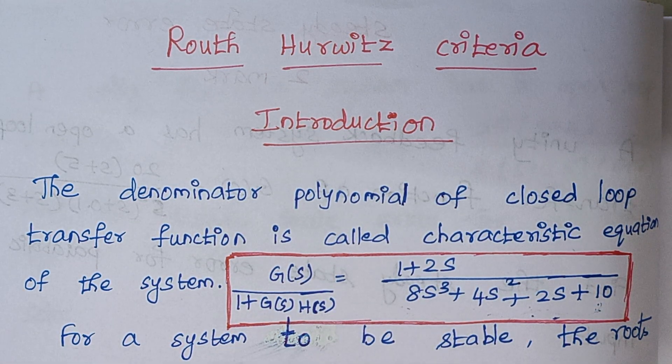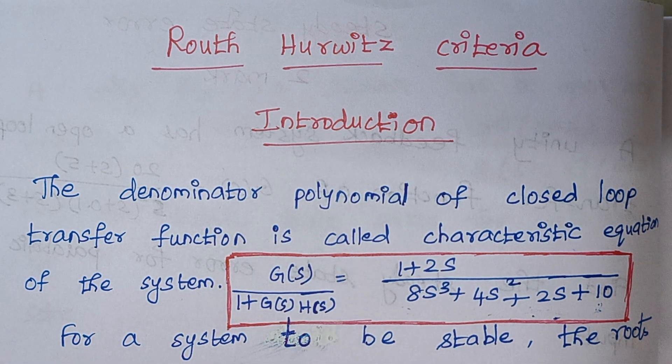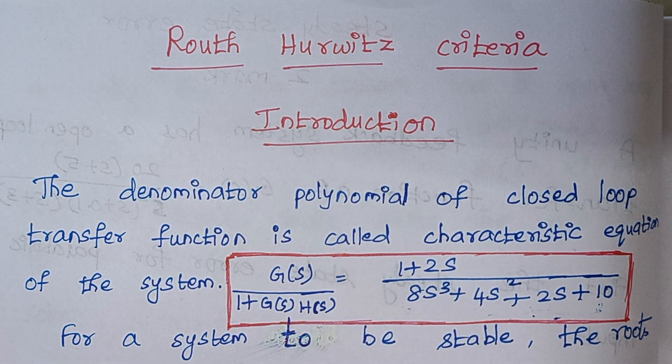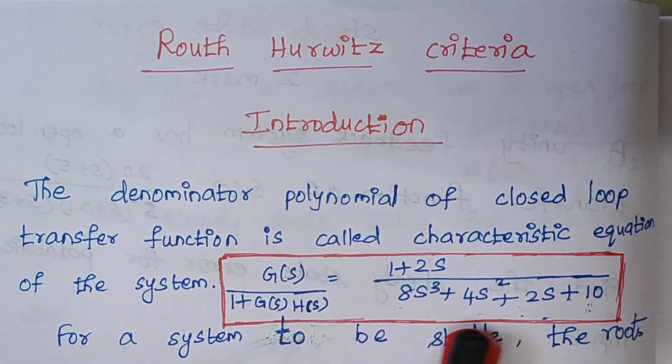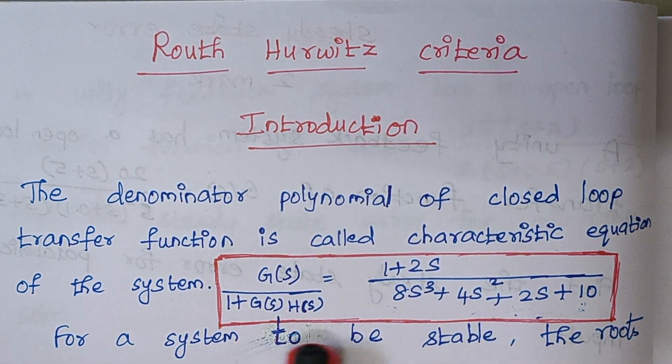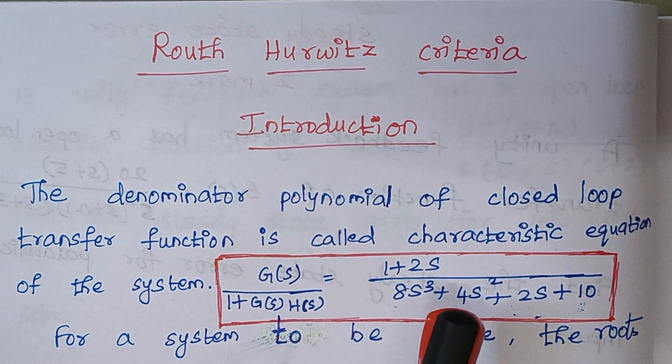So this is a criteria which is used to tell whether a system is stable or not from its closed loop transfer function. So this is an example, this is a closed loop transfer function of a system.